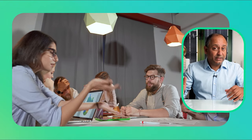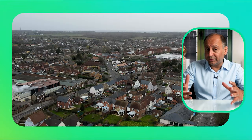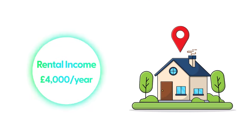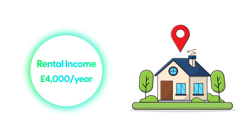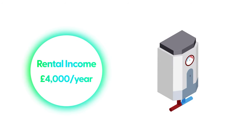When it comes to buy-to-let, one of the challenges that many investors face, especially in smaller towns, is that the rental income they've got coming in — they find that maintenance actually outweighs the rental income. For example, let's say you've got a nice net rental income of £4,000 a year on a small property. However, if the boiler breaks, that's your £4,000 gone.